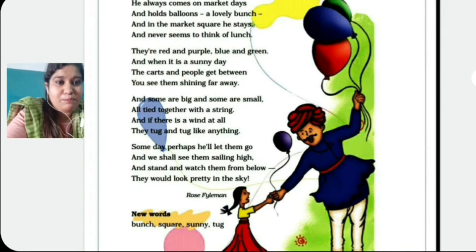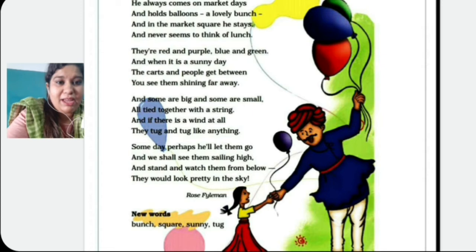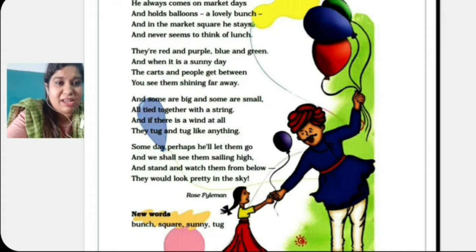Someday, perhaps, he will let them go — it means the child imagines the balloon man will release the balloons into the sky. And we shall see them sailing high, and stand and watch them from below. The balloons would look pretty in the sky.